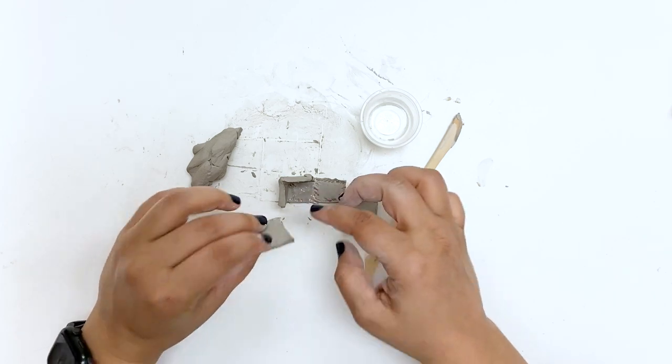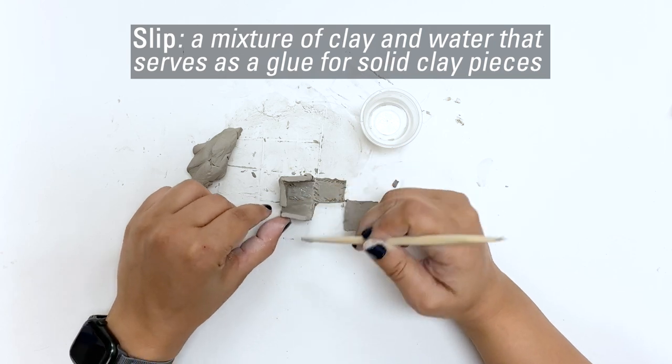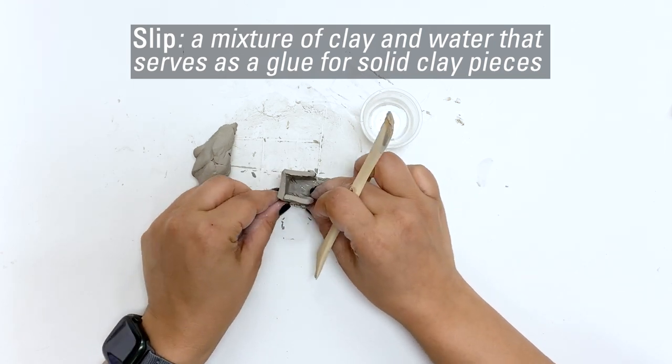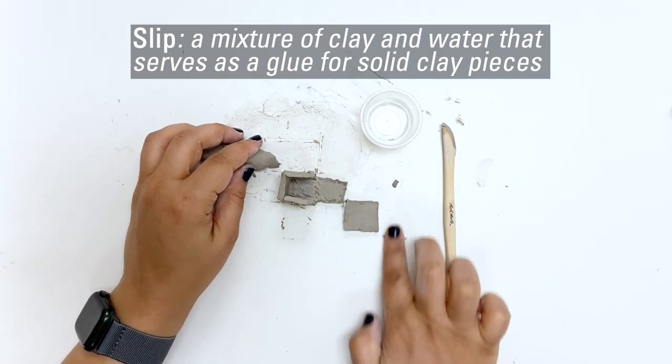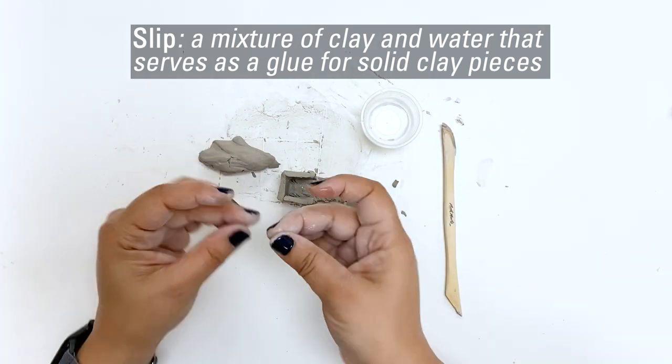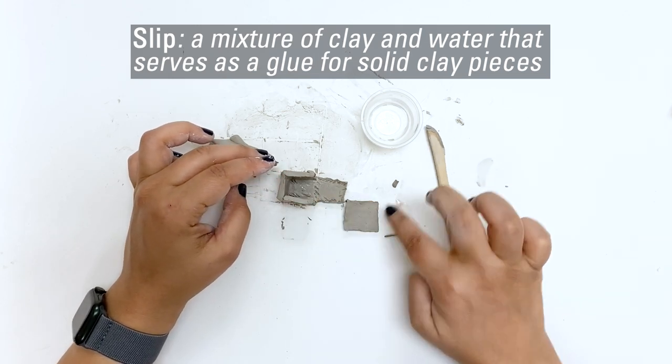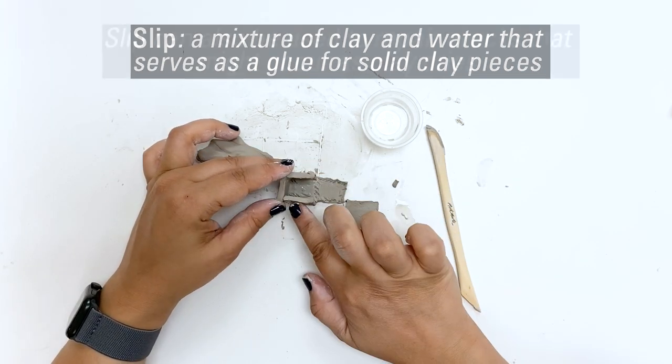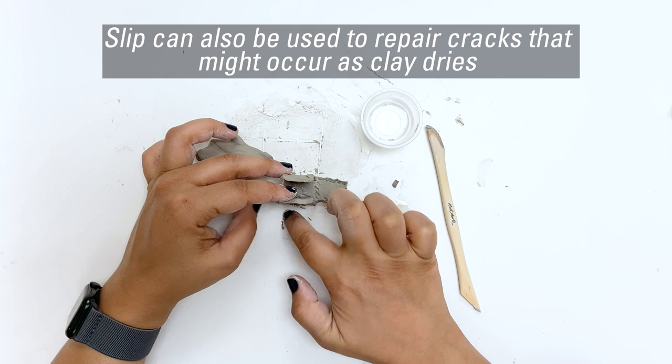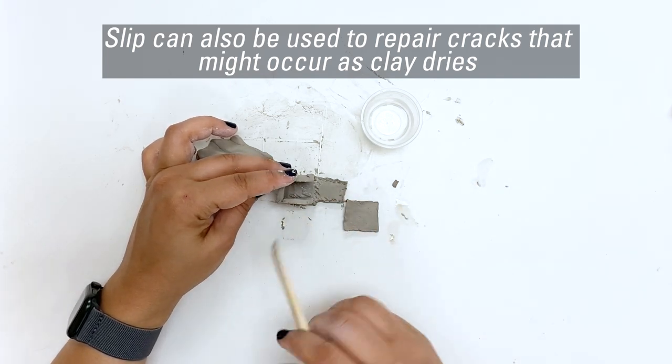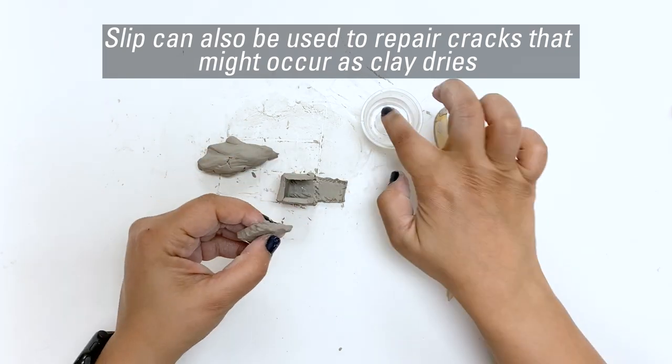Another option that you could do right here is to create a slip instead of just using water. Now, score and slip is the traditional technique for slab building where you score first, and then slip is a thick, soupy mixture of extra clay and water. And that creates a glue that helps bind the edges of your clay together. It can also be really helpful for when your piece is drying and if you see a crack or it seems like it's flaking in places, then you can use that slip to fill in those cracks.